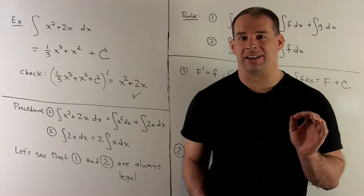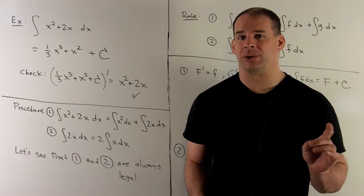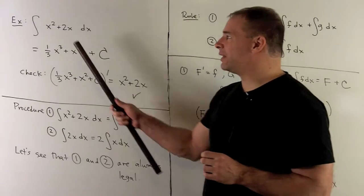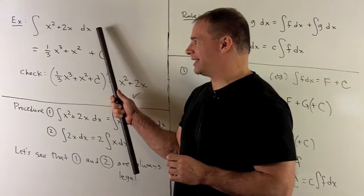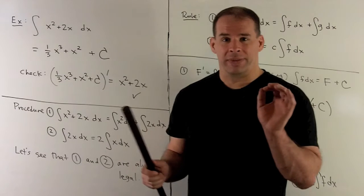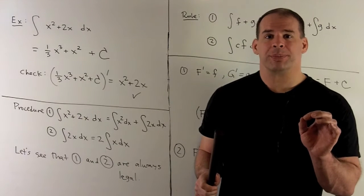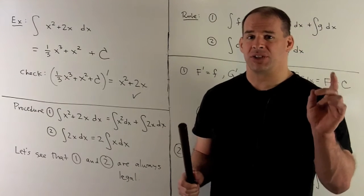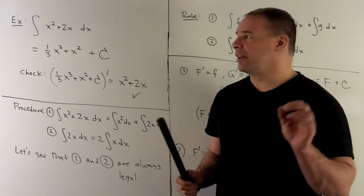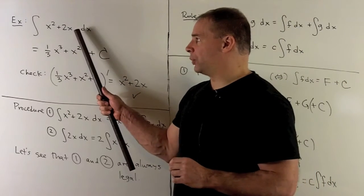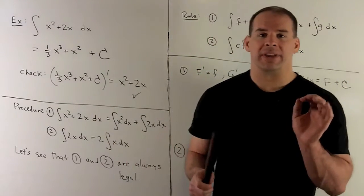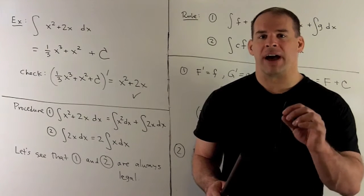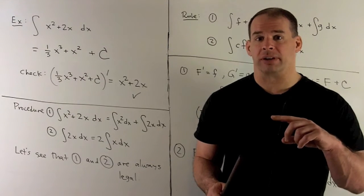Let's review our process for finding an indefinite integral by using an example. We're going to take the indefinite integral of x squared plus 2x dx. What that means is I want to find a function, capital F, such that if I take its derivative, we get back x squared plus 2x. The idea is: we're given a derivative, and I want to find all functions that have that derivative.